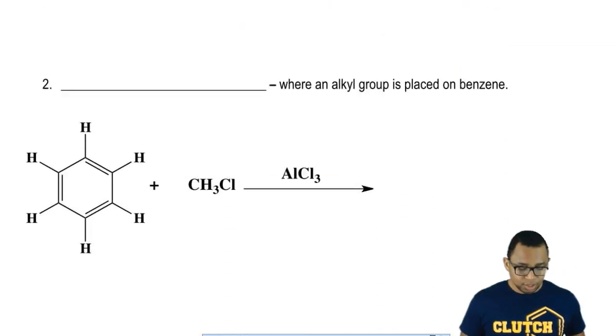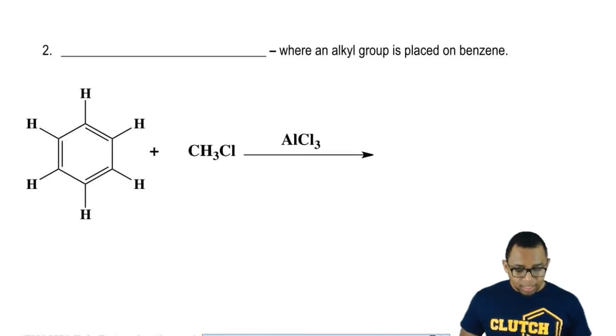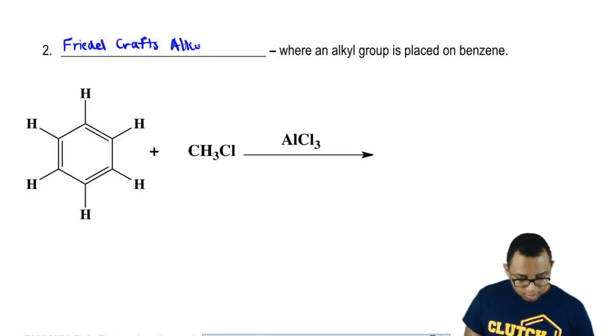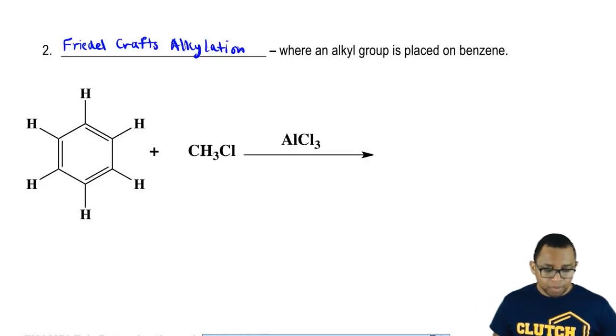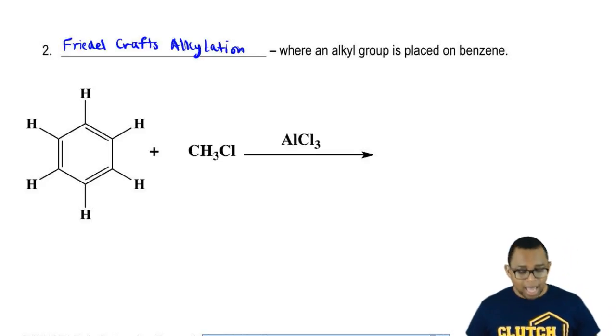Now, the other major type of reaction you're expected to know. Here, this is called Friedel-Crafts alkylation. I know, it's a mouthful. So here, this is where an alkyl group is placed on benzene. So alkyl group switches places with a hydrogen.